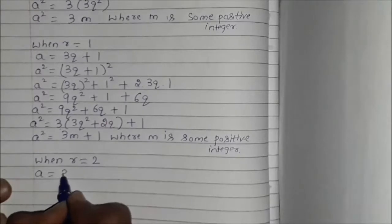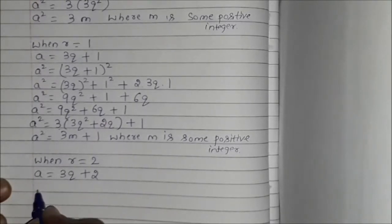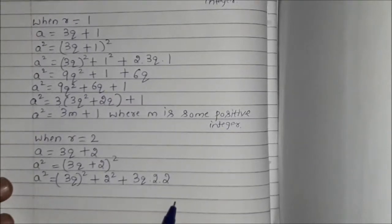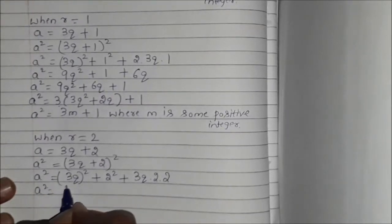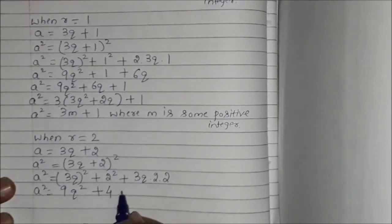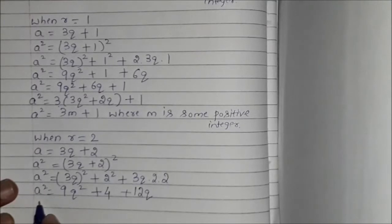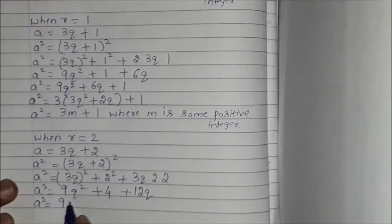Now when R is equal to 2, A is equal to 3Q plus 2. We square it: A squared equals (3Q plus 2)², which in the form (a plus b)² gives (3Q)² plus 2² plus 2 into 3Q into 2. So A squared is equal to 9Q² plus 4 plus 12Q.